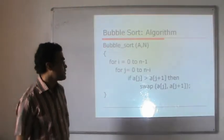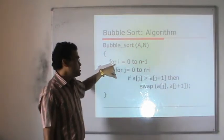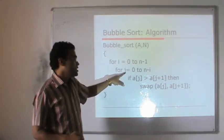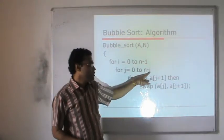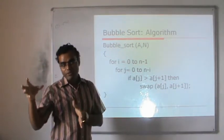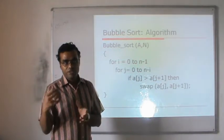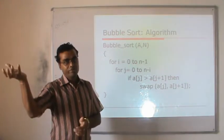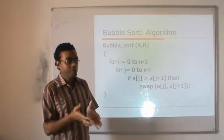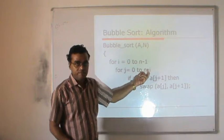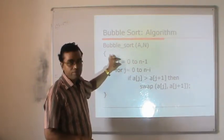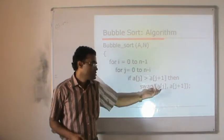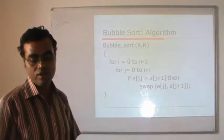The bubble sort algorithm uses an outer loop from i = 0 to n−1 for the number of passes, and an inner loop from 0 to n−i, because at every stage one element is placed in its proper position. So the number of comparisons keeps reducing by 1 each pass. If the element at index j is greater than at j+1, we shift them. This forms the algorithm for bubble sort.